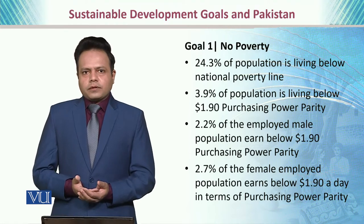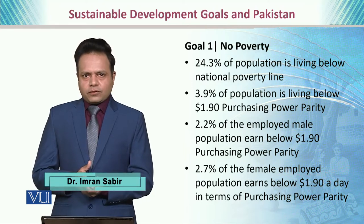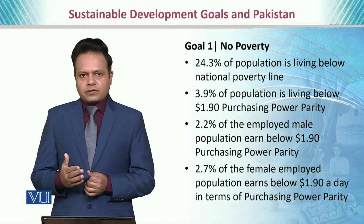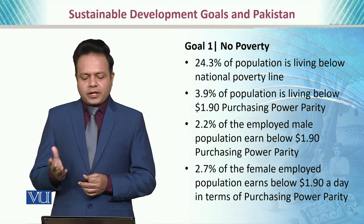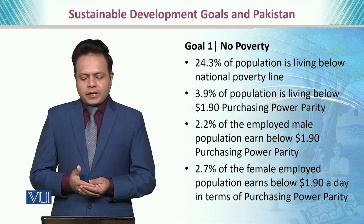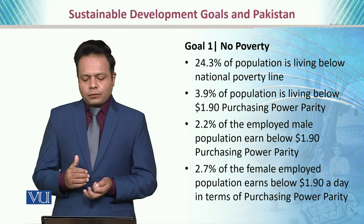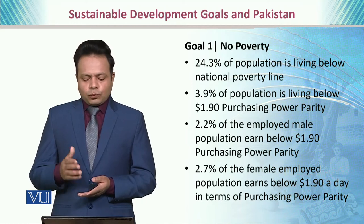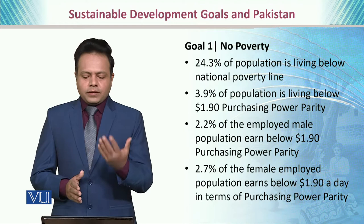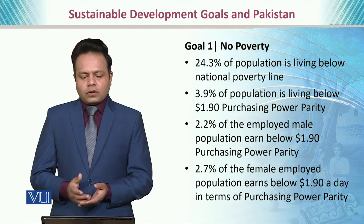Number one goal is no poverty. Let's see whether we have been able to reach that goal or not. 24% of the population is living below the national poverty line, whereas 3.9% of the population is merely living on $1.9 a day. 2.2% of the employed male population earns below $1.9 a day, whereas 2.7% of the female population earns below $2 a day. By looking at these statistics, we are quite far from the goal of no poverty.